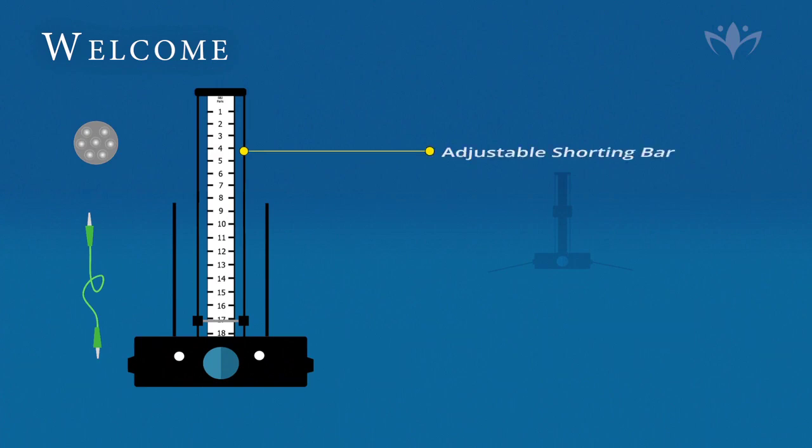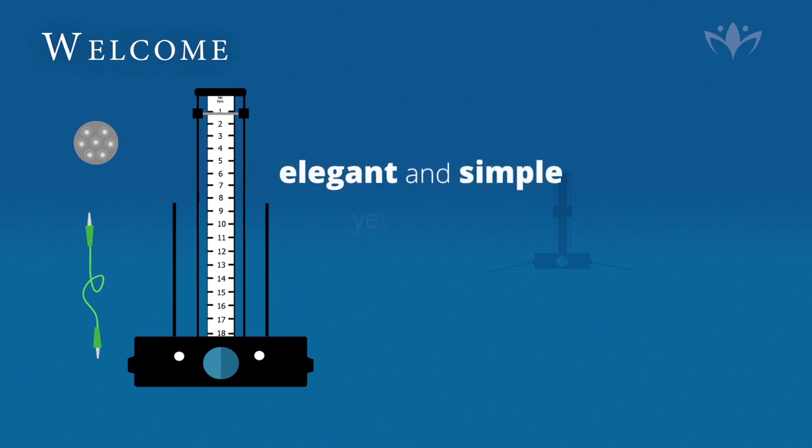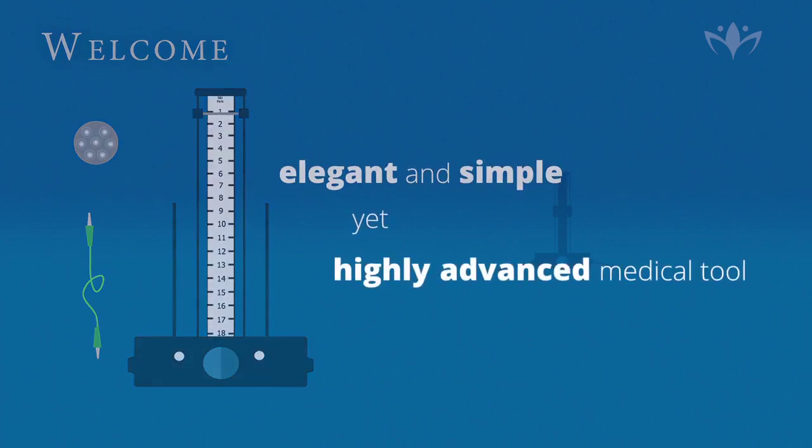An adjustable shorting bar allows you to change the length of the reading apparatus and tune in to specific frequencies of different wavelengths. These features combined make for an elegant and simple yet highly advanced medical tool.